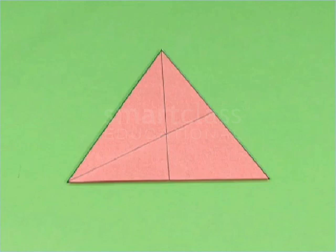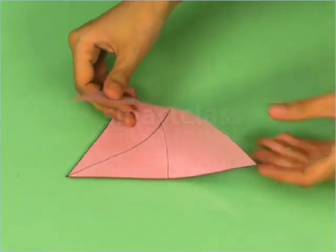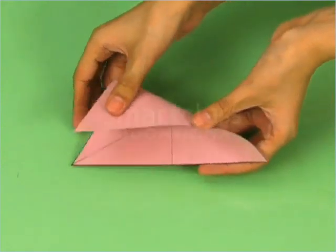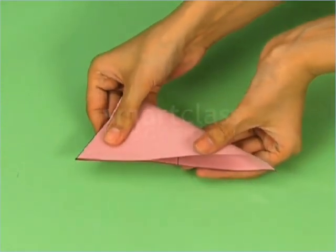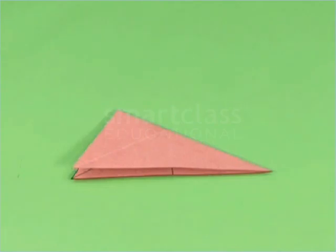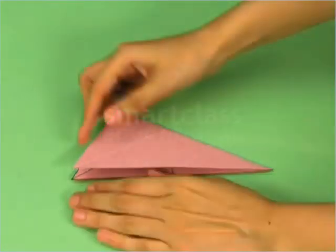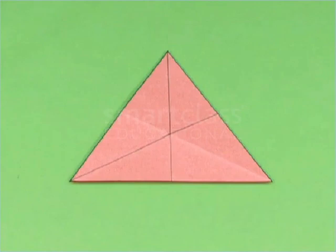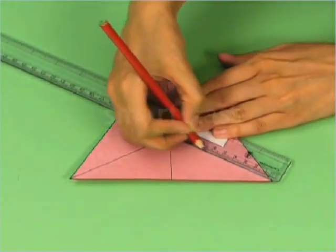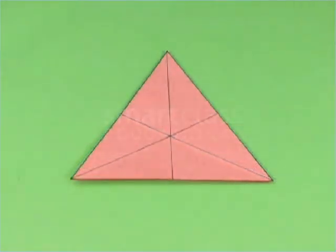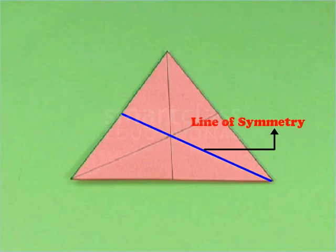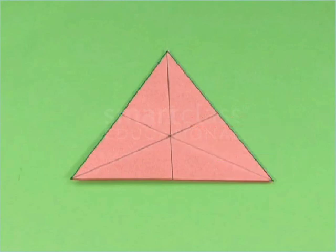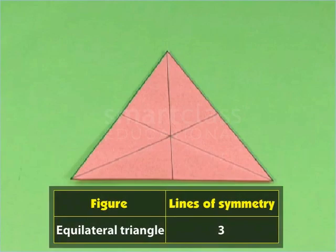Next, fold the triangle through the remaining vertex so that the two parts of the triangle exactly overlap each other. Draw a line on the crease. This line of fold represents the third line of symmetry of the triangle. An equilateral triangle has three lines of symmetry.